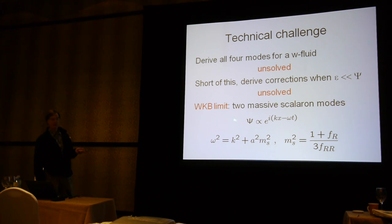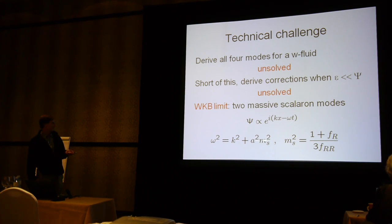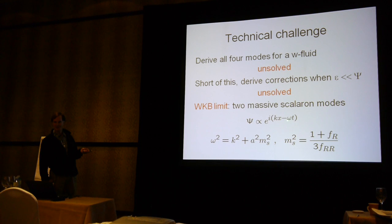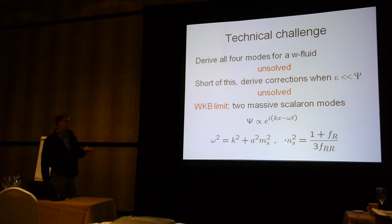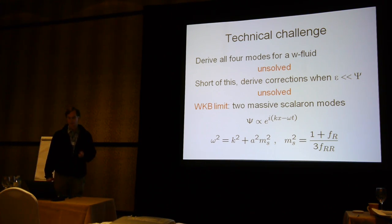There is a limit in which the solution is quite straightforward: the WKB limit, where the potential and the scalaron all have modes like plane waves with frequency ω obeying a dispersion relation. This just comes directly from the equations of motion. The scalar mass squared m_s² involves f_R and f_RR — the first and second derivatives of f with respect to R. This result has been known in the literature for a number of years. F_R is dimensionless; f_RR has units of one divided by the Ricci scalar, so m_s² has units of the Ricci scalar, which is frequency squared.